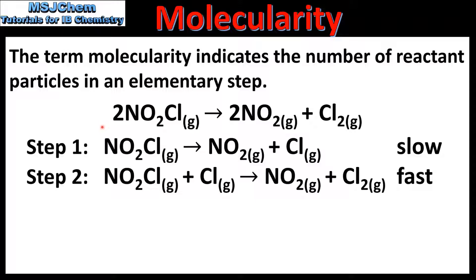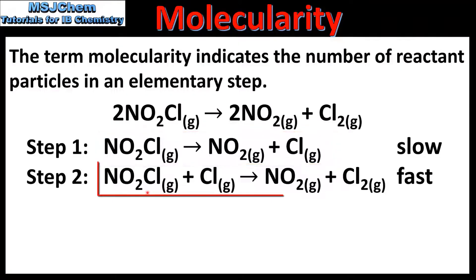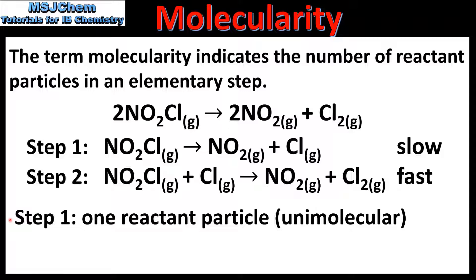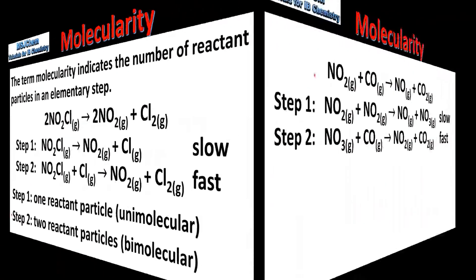Here we have a reaction together with a proposed two-step mechanism. In the first step, one particle of NO2Cl decomposes to form NO2 and an atom of chlorine. In the second step, a particle of NO2Cl reacts with an atom of chlorine to form NO2 and a chlorine molecule. So in step one we have one reactant particle, which is known as being unimolecular. In step two we have two reactant particles, which is known as being bimolecular.